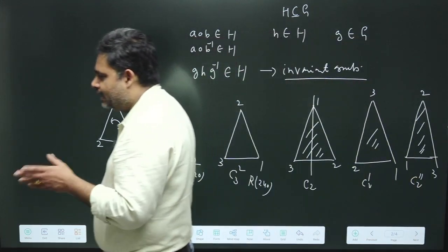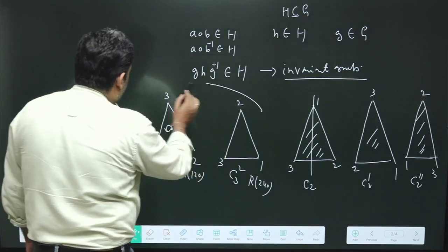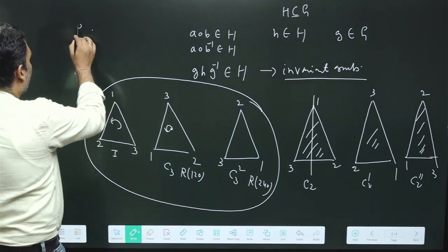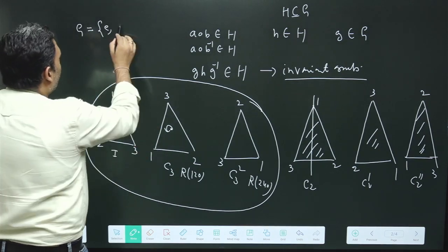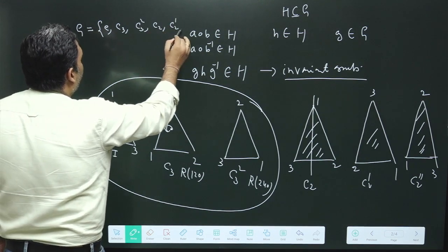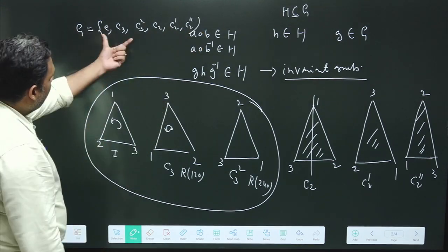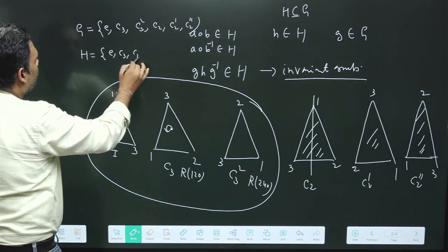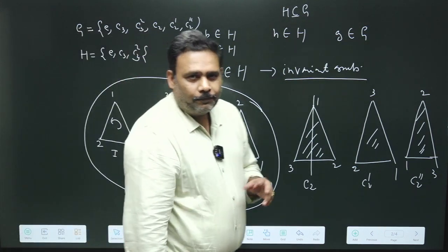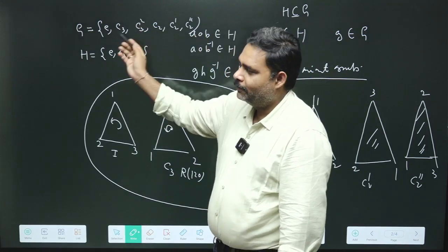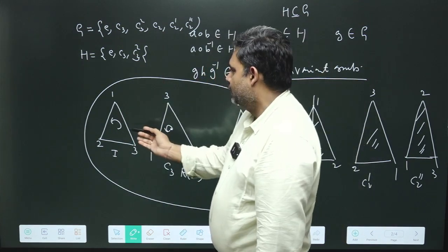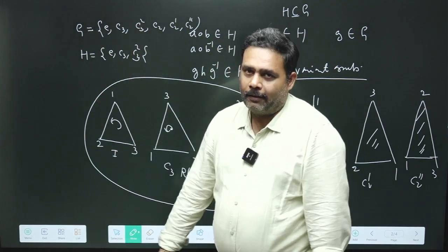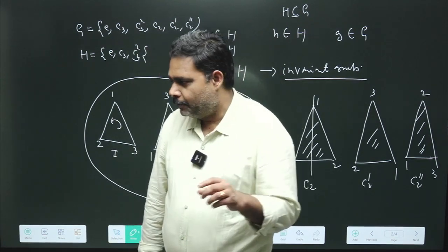In a previous video we discussed that these form a group. The full dihedral group has elements: E, C3, C3², C2, C2 dash, and C2 double dash. Now if we take the subset H = {E, C3, C3²}, this also forms a group, which we proved separately. So the rotations about 120 degrees and 240 degrees about the Z axis form a subgroup of the dihedral group. This is a very important concept.